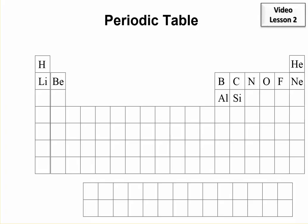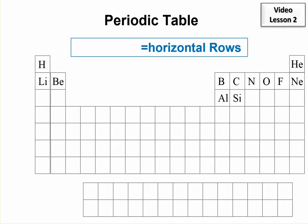So some basics about the periodic table. The horizontal rows, in other words, going across like this, even up here where it doesn't continue, those are called periods.